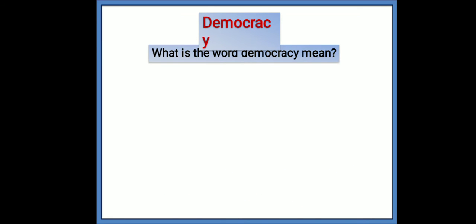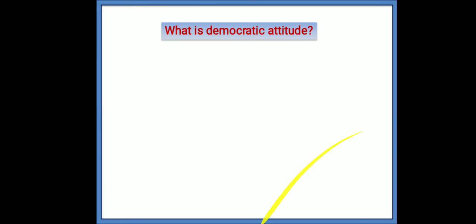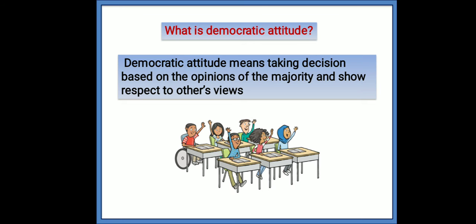What is democracy? What does the word democracy mean? The word democracy means ruled by the people. What is democratic attitude? Democratic attitude means taking a decision based on the opinion of the majority and showing respect to others' views.